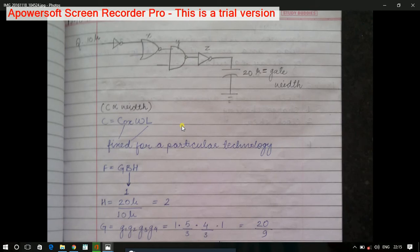Effort delay takes care of some parts: electrical effort, logical effort, and branching effort. Capital F is the effort delay, which equals the product of G (logical effort), capital B (branching effort), and capital H (electrical effort).